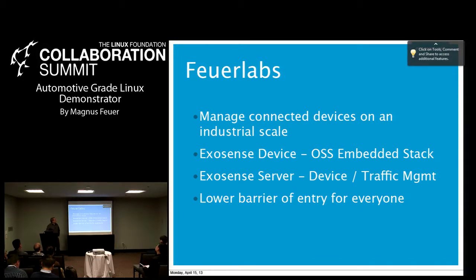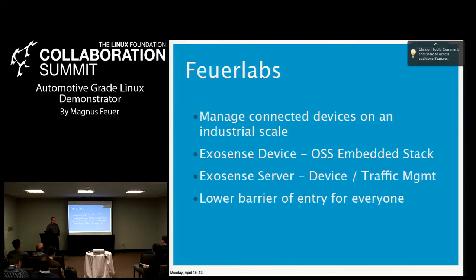What we do at the company, and why we're approaching AGL and JLR, is to basically manage connected devices at industrial scale. We do device management and traffic management. We route traffic to devices in hard environments such as telematics, where links may or may not be available, there may be multi-pathing, and there may be cost constraints on how much data you can send in a month.